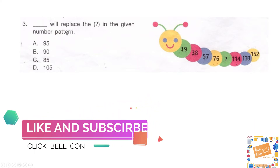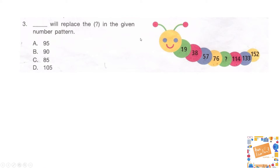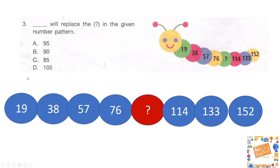Our third question: what will replace the question mark in the given number pattern? The options are: option A — 95, option B — 90, option C — 85, option D — 105. I've enlarged the number pattern here — why don't you try to solve it and then we'll look at the answer together.